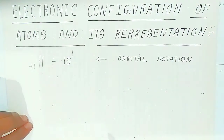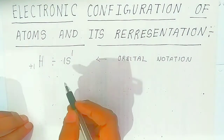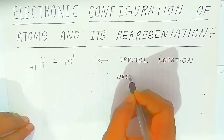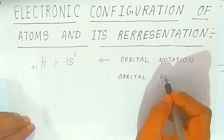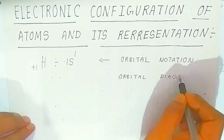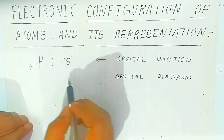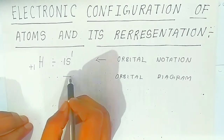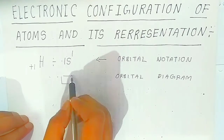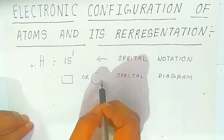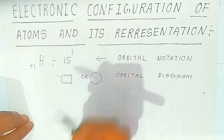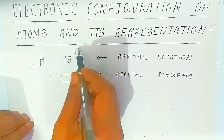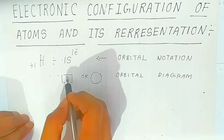If you want to write an orbital diagram, you can use a circle or a box symbol. We are interested in the box form, so you put one electron in the box. This represents the one electron of hydrogen in the orbital diagram.